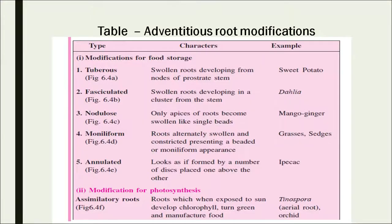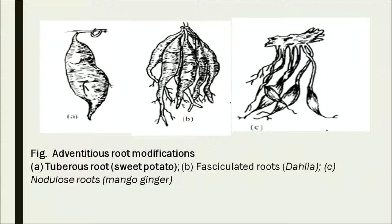Next, let's look at adventitious root modification examples in the table. Tuberous roots are seen in sweet potato, fasciculated roots in Dahlia, nodulose roots in mango and ginger, moniliform roots in grasses, and annulated roots in Ipecac.